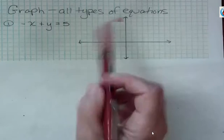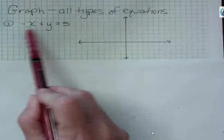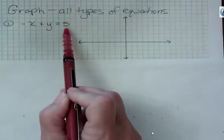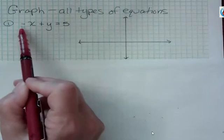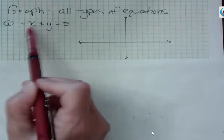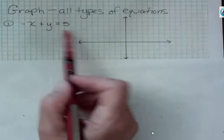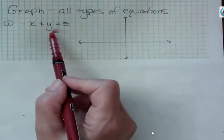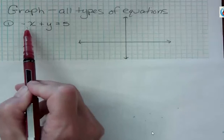If I want to graph an equation like this, negative x plus y equals 5, this is pretty much standard form. In standard form, we usually don't like to have a negative out front, but the x and the y are together. And so when I'm in this format, I have choices, but what I'm going to do is find the x and y intercept.